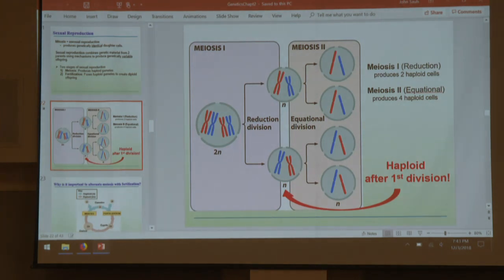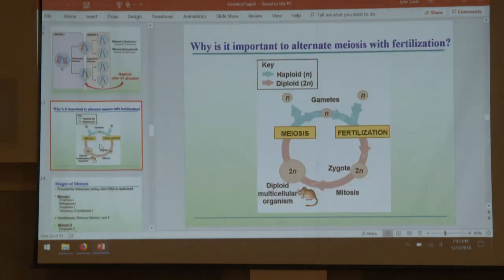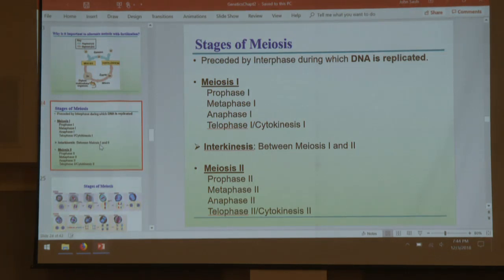An overview of meiosis: the phases are basically two rounds of mitosis, slightly different. We have meiosis I with PMAT and cytokinesis, an interphase between them called interkinesis, and then meiosis II. The only differences between the two are best explained by the graphic.